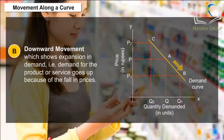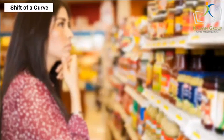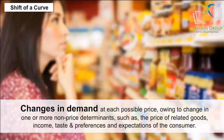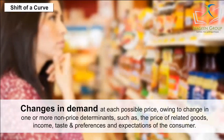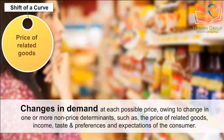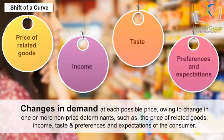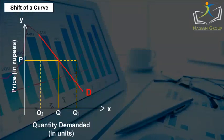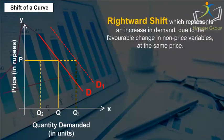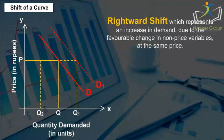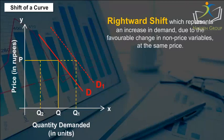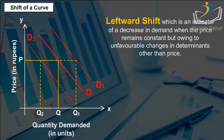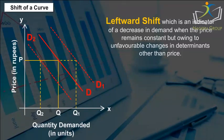Shift of a curve: A shift in the demand curve displays changes in demand at each possible price, owing to change in one or more non-price determinants, such as the price of related goods, income, taste and preferences, and expectations of the consumer. The demand curve shifts in any of the two sides: 1. Rightward shift, which represents an increase in demand due to favourable change in non-price variables at the same price. 2. Leftward shift, which is an indicator of a decrease in demand when the price remains constant but owing to unfavourable changes in determinants other than price.